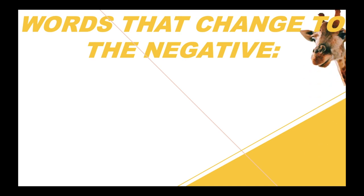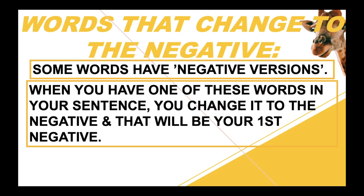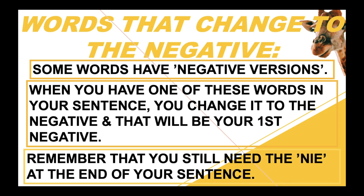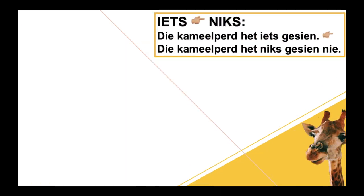So words that change to the negative — some words have negative versions of themselves. When you have one of these words in your sentence, you change it to the negative, and that will be your first negative. Remember that you still need the 'nie' at the end of your sentence. The first one: 'iets' changes to 'niks', or something to nothing. 'Die kameelpaard het iets gesien' becomes 'die kameelpaard het niks gesien nie.'